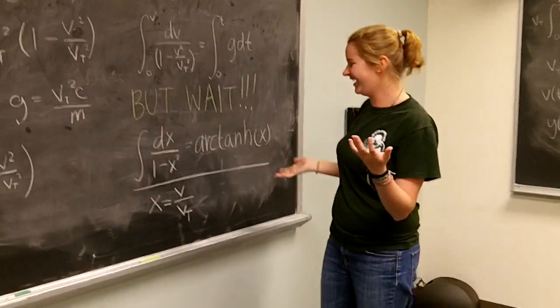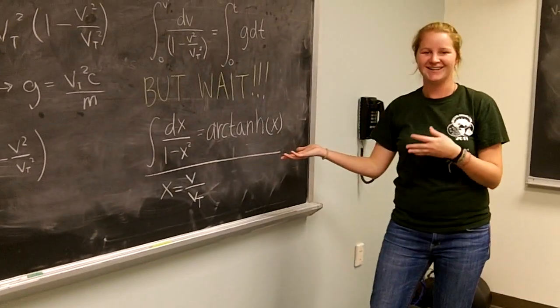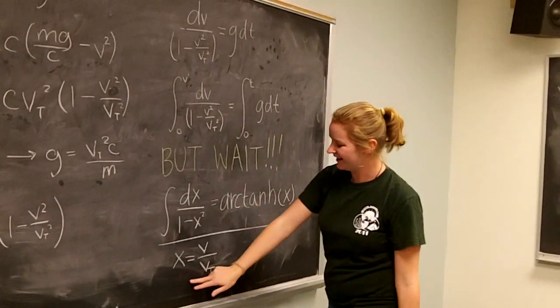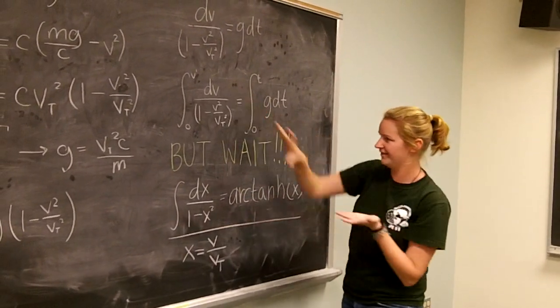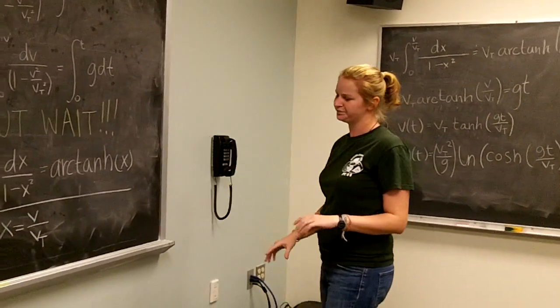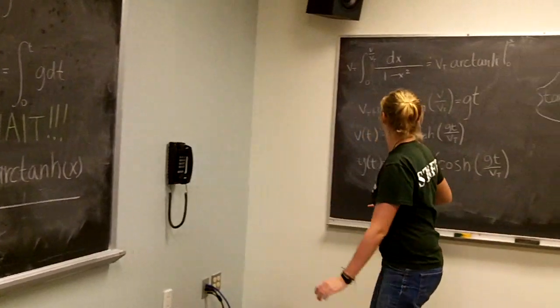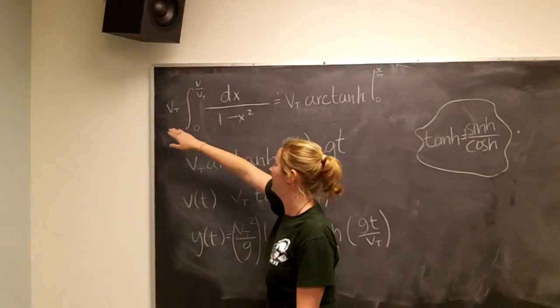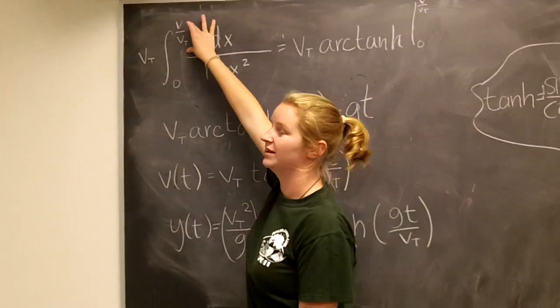But wait! Oh my gosh! Did you know that this is the integral for arc hyperbolic tangent of x? Crazy! So if you see, if we set x equal to v over vt, we're already in that form. So we can use this integral to our advantage. So if you do a change of variables, you use substitution, you get this. Remembering that when you take the dx, the vt is going to pop out that you can bring outside of the integral. And remember to change your limits of integration.